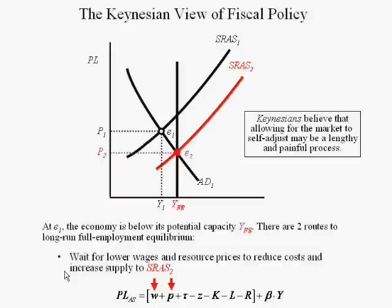Keynesians believe that allowing the market to self-adjust is a lengthy and painful process — going from $15 to $12 an hour makes it harder to make ends meet. The process is lengthy partly because of unemployment benefits being extended, welfare programs, and food stamp programs. Without these programs, workers' reservation wages would drop much more rapidly. But if you know you'll get unemployment for up to 99 weeks, you're less likely to take a lower-paying job and will wait out the recession for something closer to your previous pay.